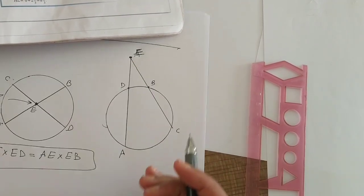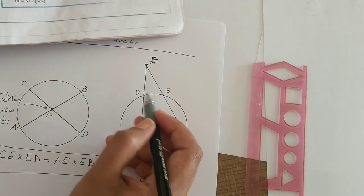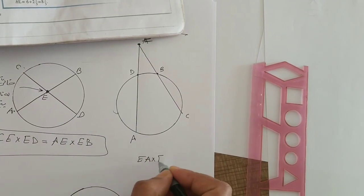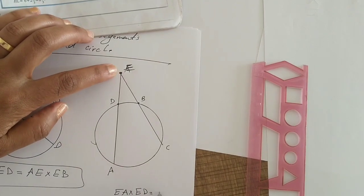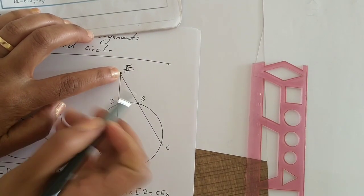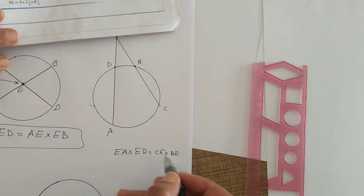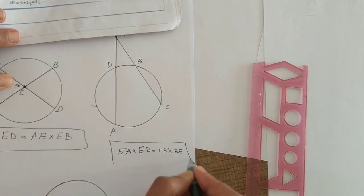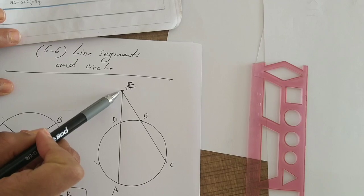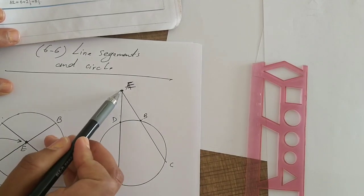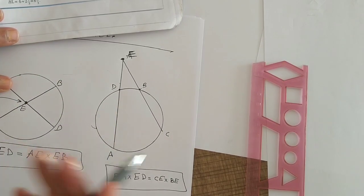But the part E-A is the part of the chord, and the part of the chord. E-D is the part; C-E is the part of the chord. And this is the part of the chord.